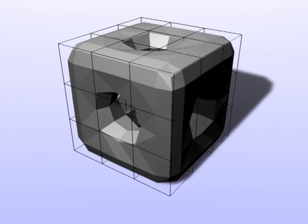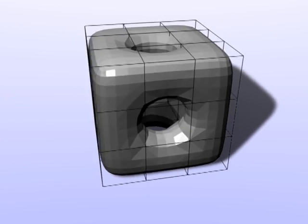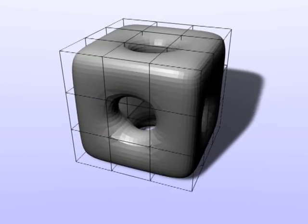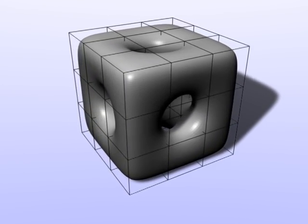We present surfaces of arbitrary topology with all the features of NURBS. Our method uses subdivision steps to iterate to a smooth limit surface.